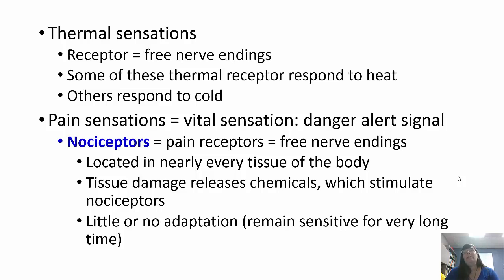Pain sensations are vital to survival — they tell you something is really wrong and act as an alert signal. These are called nociceptors, or pain receptors. They are free nerve endings present in almost every tissue of the body. Tissue damage releases chemicals that stimulate nociceptors. There is very little if any adaptation, so they remain sensitive for an extremely long time — if you couldn't feel pain, you would never know if you had a cut, broke something, or anything was wrong.